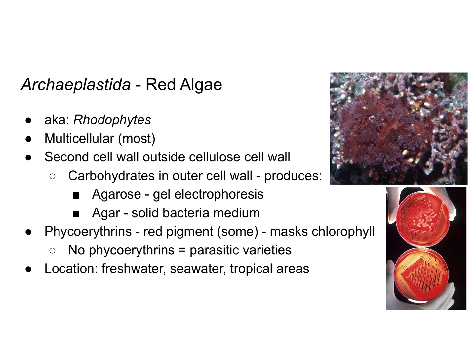Red algae are also in the supergroup Archaeplastida. Red algae are also known as rhodophytes. Most of them are multicellular. They have a second cell wall outside of a cellulose cell wall, and this second cell wall is made up of carbohydrates that we as humans can use to make agarose and agar. Agarose is a gel-like substance — kind of like jello or gelatin — that is involved in gel electrophoresis.